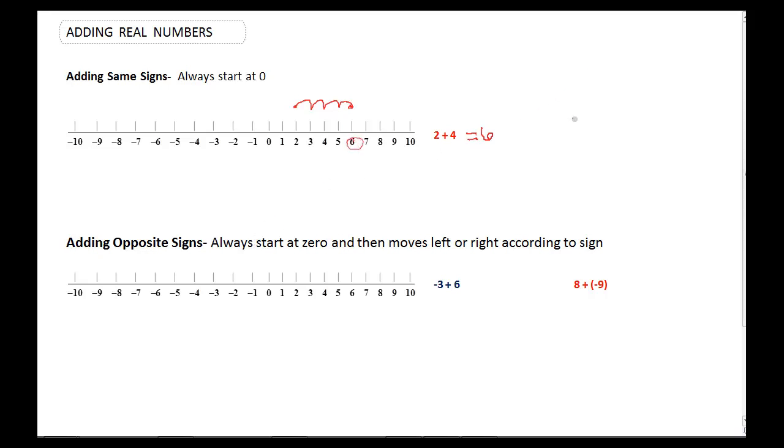What if that had been negative 2 plus negative 4? Well, we would have started at negative 2, and we would have gone in the negative direction 4 units, so to the left. So we go 1, 2, 3, 4, and that gets us to negative 6. So we start here and go left 4. In this example we started here and went right 4.